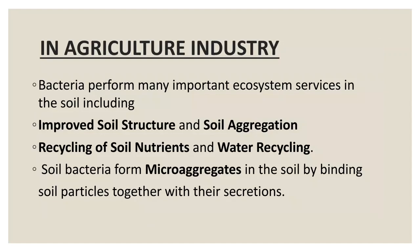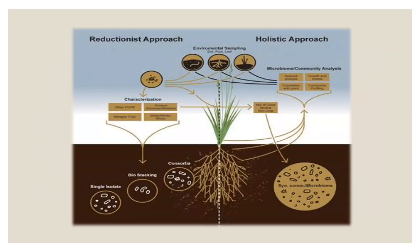In the agriculture industry, bacteria perform many important ecosystem services in the soil, including improved soil structure, soil aggregation, recycling of soil nutrients, and water recycling. Soil bacteria form microaggregates in the soil by binding soil particles together with their secretions. You can observe in the diagram how bacteria help plants.